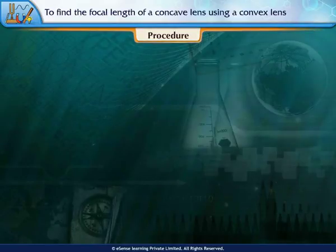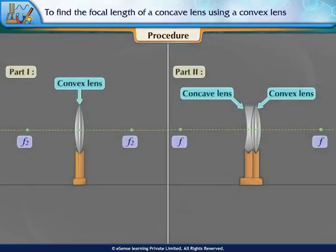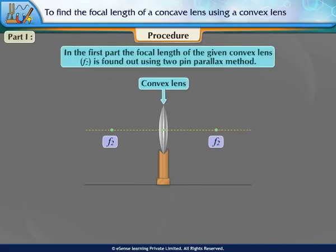Procedure Part 1. The experiment is done in two parts. In the first part, the focal length of the given convex lens F2 is found out using the two-pin parallax method.